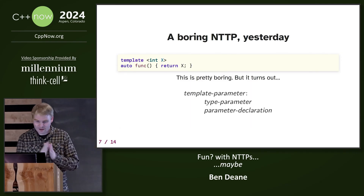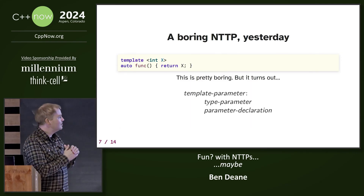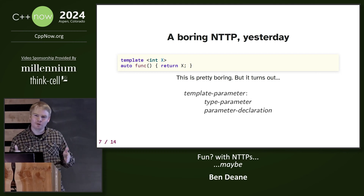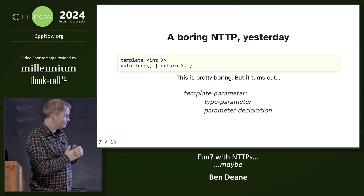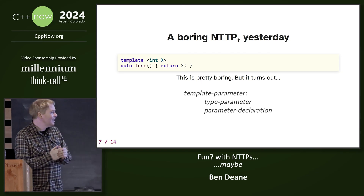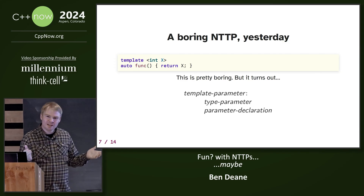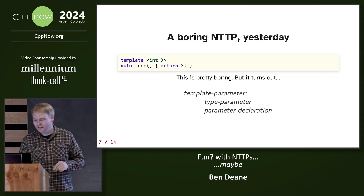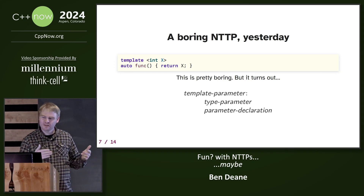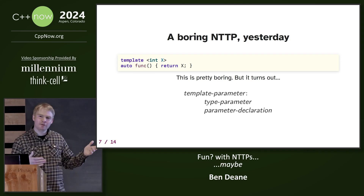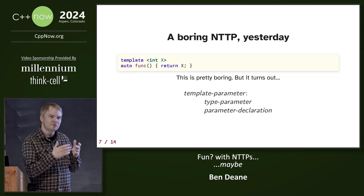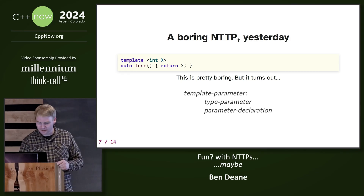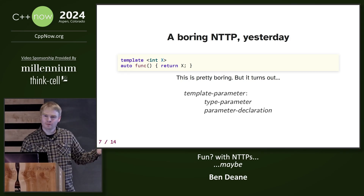That was the serious part of the talk. Here we have a boring non-type template parameter, but spelunking the grammar is a good source of lightning talk material, I have found. If you look at the grammar, it says: what's the grammar production for template parameters? Type parameters — and that actually includes template parameters — or parameter declaration. Parameter declaration is the same production used for regular function arguments, and it's also used for NTTPs. So I thought, let me try some stuff.